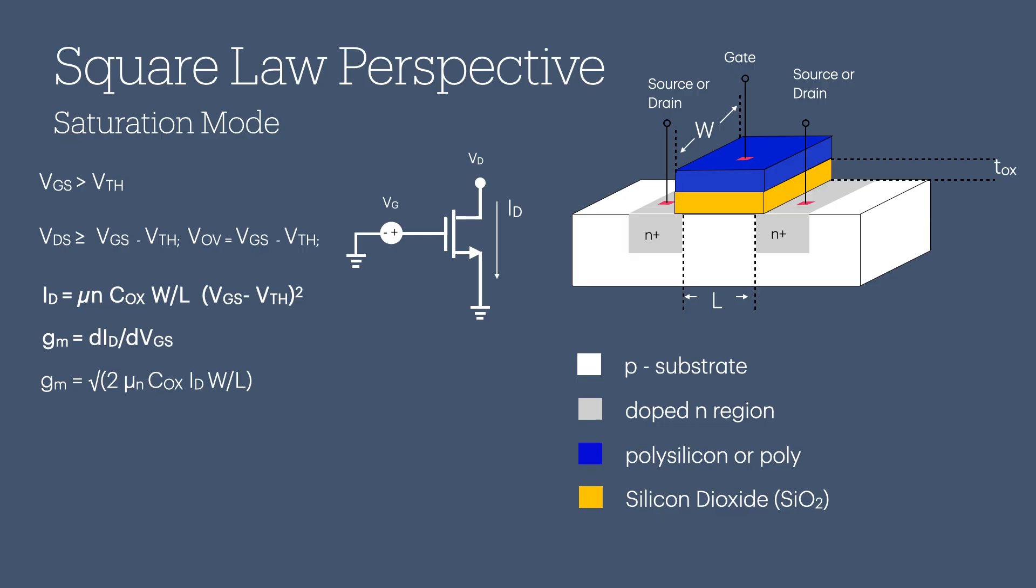While this formula might not be exact for the most advanced devices, it gets the main point across. You can choose any combination of W, L, and ID to reach a desired GM. There are many possibilities.